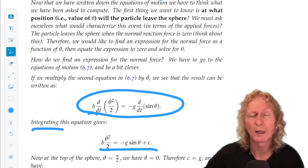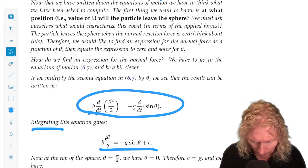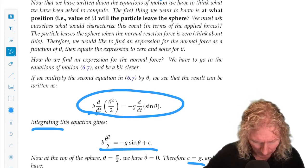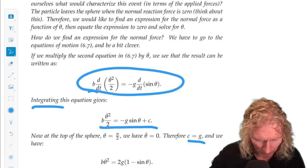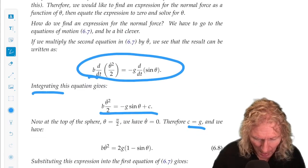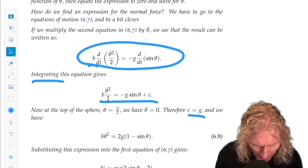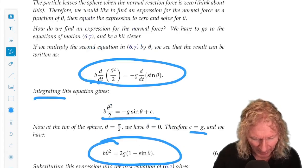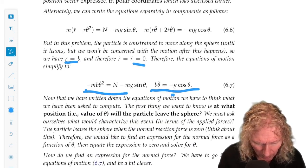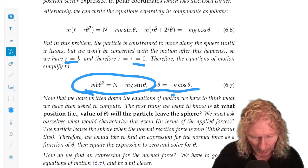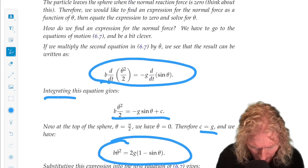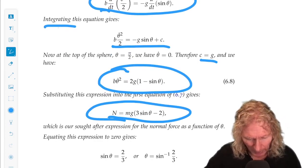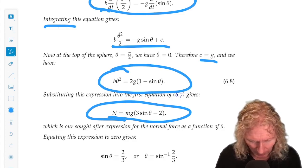And at the top of the sphere, theta equals pi over 2, and it's not moving. So the constant is given by c equals g. Theta equals pi over 2, theta dot equals zero, c equals g. So we plug that back in, and that gives us this expression. That's exactly what we need to get n only as a function of theta. And so we see for n equals zero, sine theta equals 2 over 3.